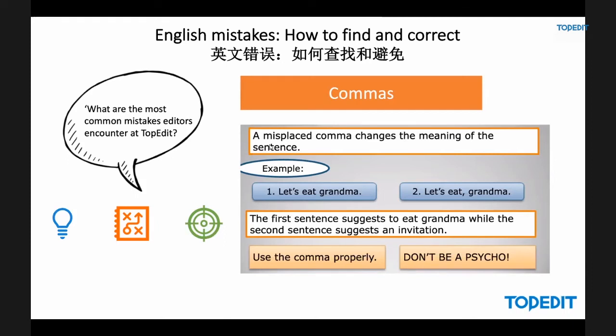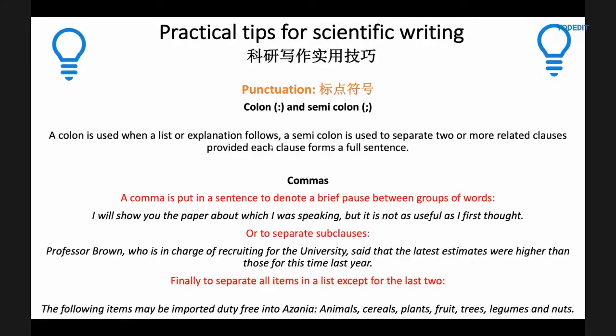What about commas? A misplaced comma can change the meaning of a whole sentence. For example: 'Let's eat, grandma' versus 'Let's eat grandma.' The first sentence suggests we're going to eat grandma, while the second suggests we're inviting her to come to dinner. So use the comma properly and don't eat your grandma.